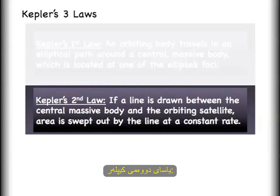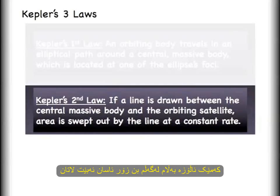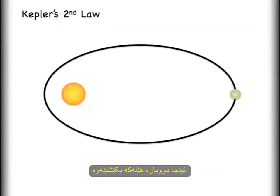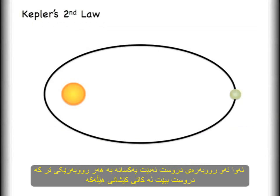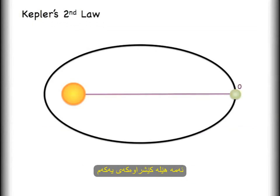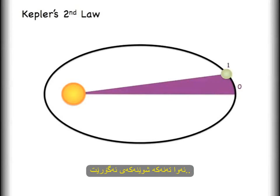We'll come back now to start looking at Kepler's second law. This line is drawn between the central massive body and an orbiting satellite. Area is swept out by that line at a constant rate — let's see what I mean by that. We have that green object orbiting the big massive central object; let's just call it a planet. Between the two objects, this is the line we are going to use. This line will continue to move up and to the left over time.